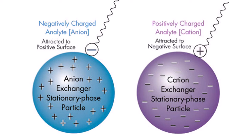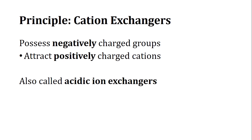An anion exchanger exchanges anions and a cation exchanger exchanges cations. The logic is clear: to exchange a positively charged particle, the matrix must be negatively charged, and vice versa. Cation exchangers possess negative groups and attract positively charged cations; they are also called acidic ion exchangers, since acidic ions like acetate are negatively charged.